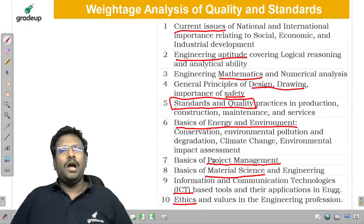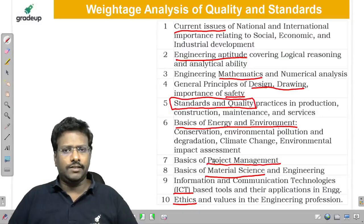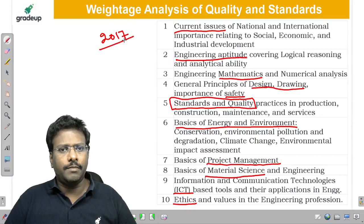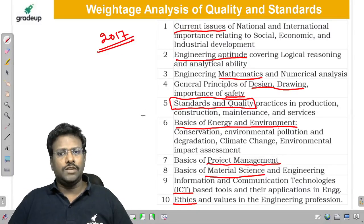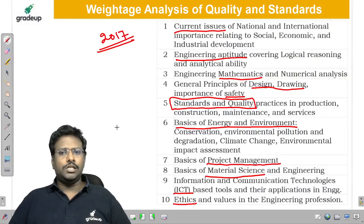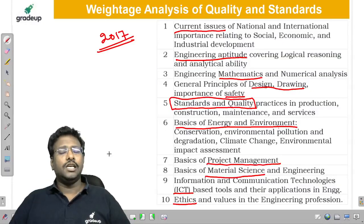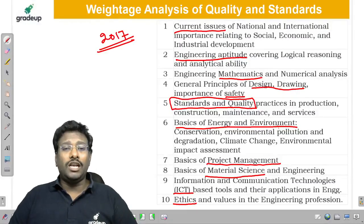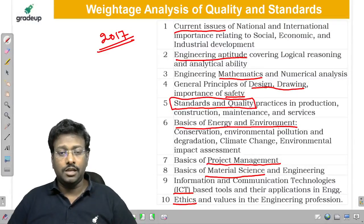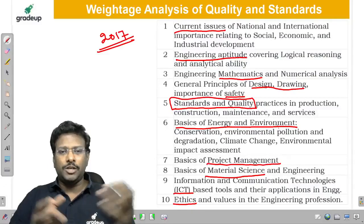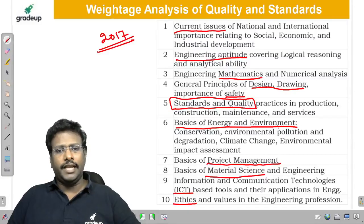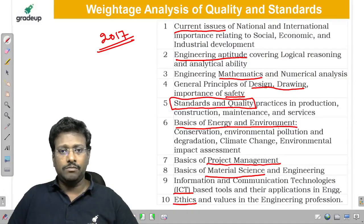Among these, if you observe, the majority were introduced in 2007 — like Drawing, Standards and Quality, Project Management, Material Science, ICTE, Energy and Environment, and Ethics. From that time we had one doubt: what are the boundaries, up to what level can we get the questions? Now we have a little bit of clarity because based on four examinations, we can observe up to what depth they are able to ask questions in the ESC prelims examination.